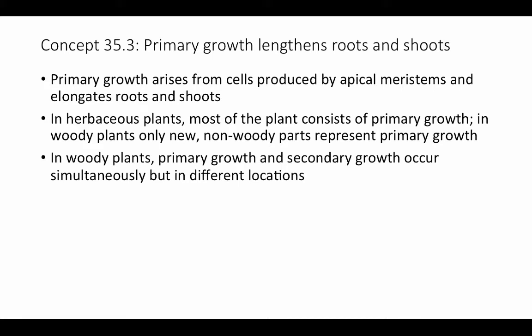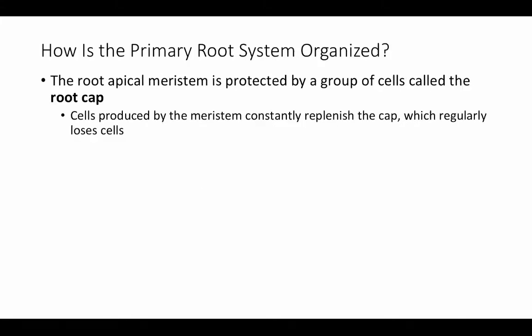In woody plants, primary growth and secondary growth occur simultaneously but in different locations. Thickening of the main stems and branches that have finished elongating happens at the same time that new primary growth — elongation — occurs just out at the tips.